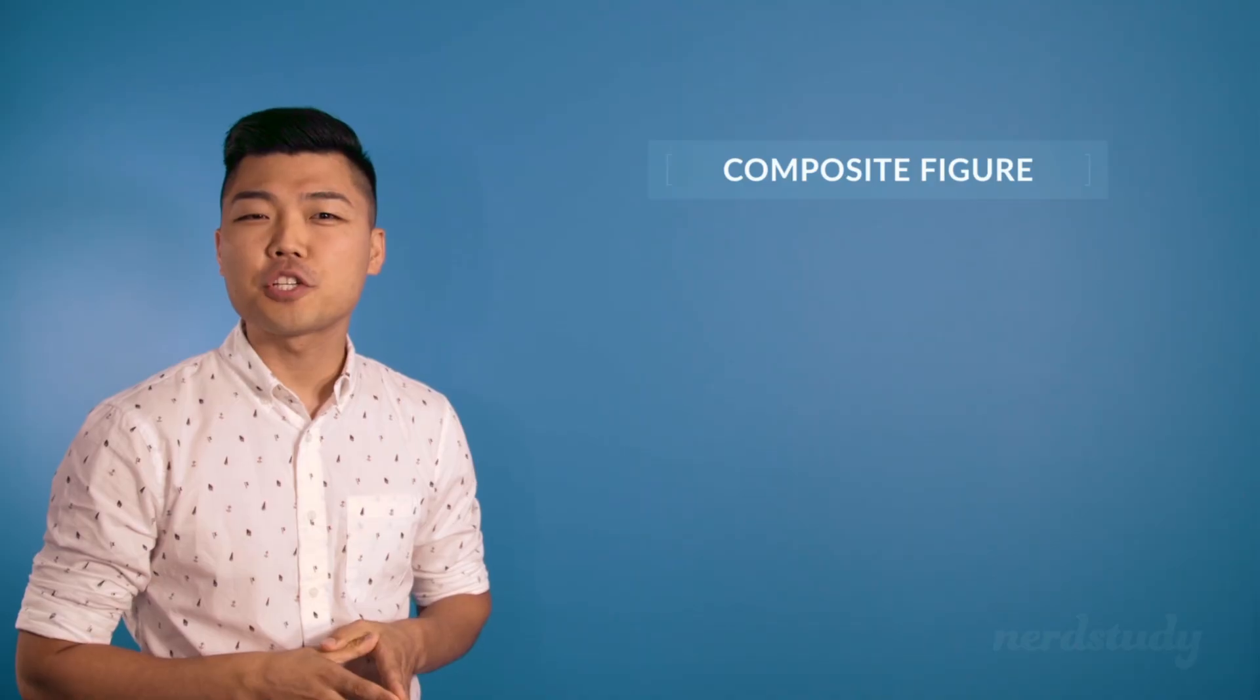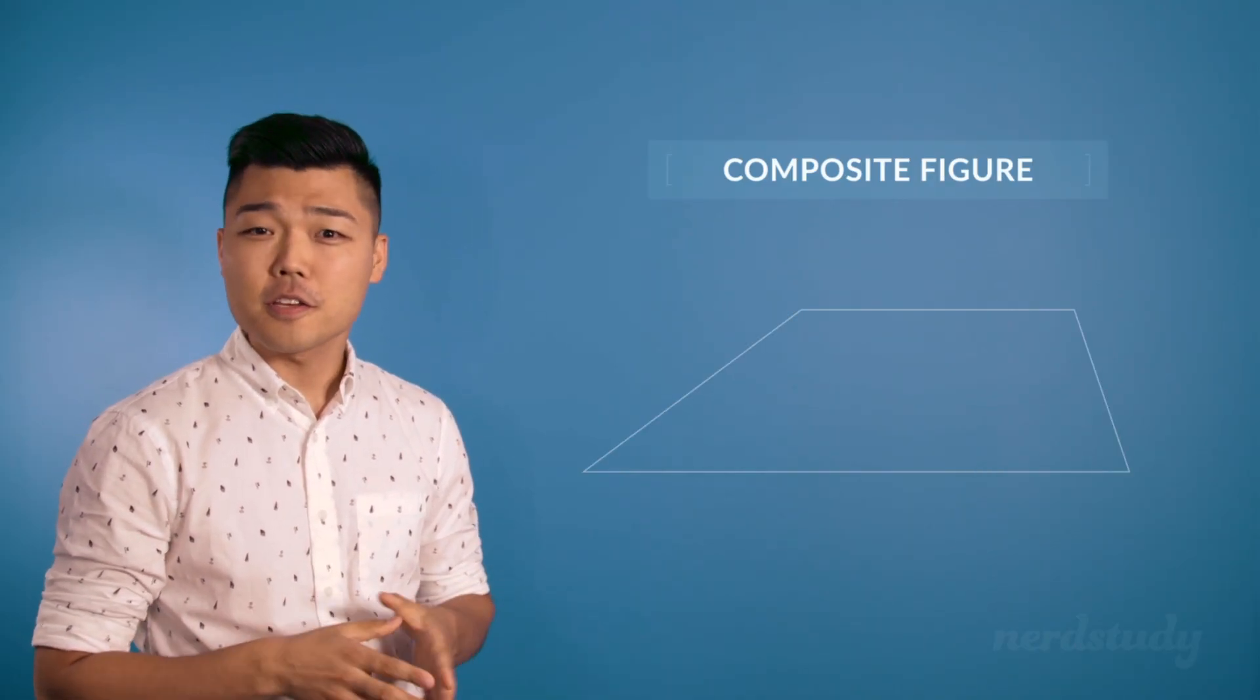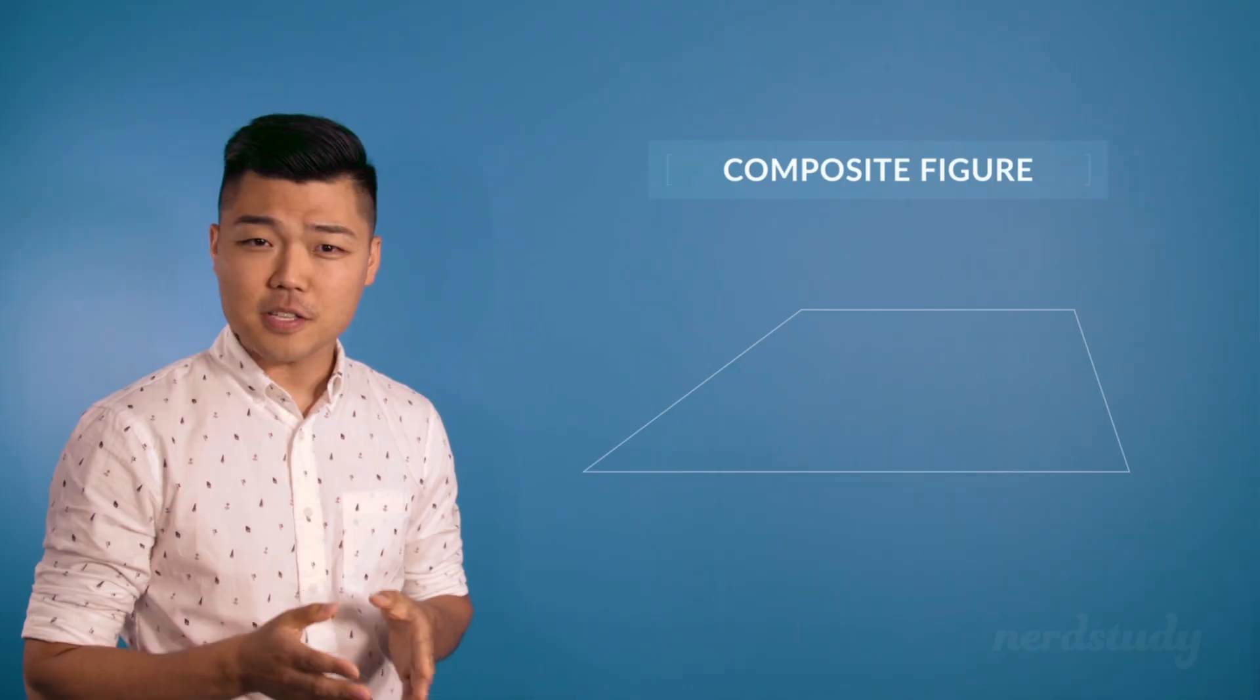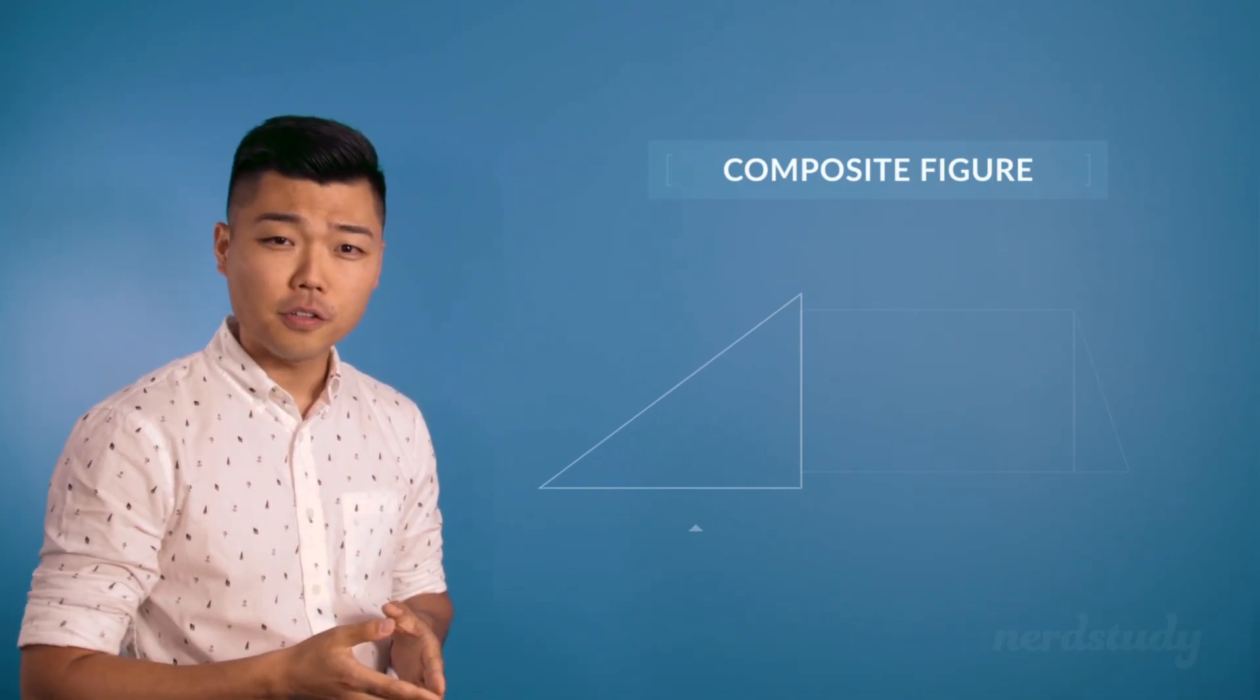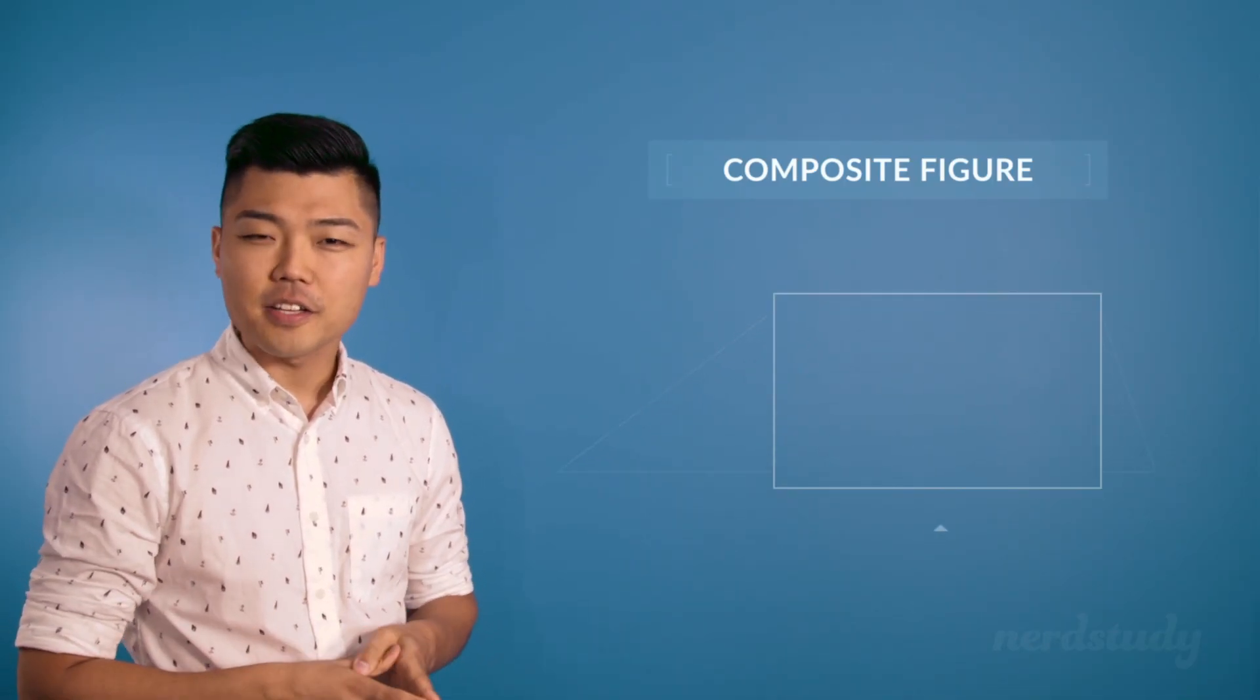So take for example a shape like this one. Notice that this shape can actually be seen as a combination of a triangle, a rectangle, and another triangle.